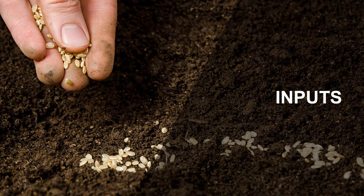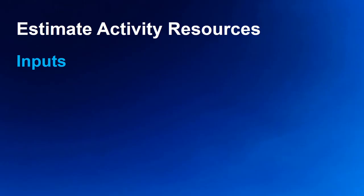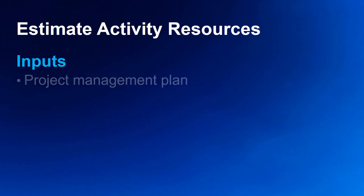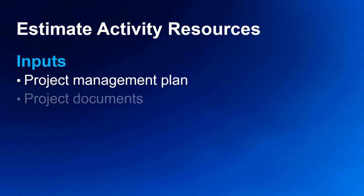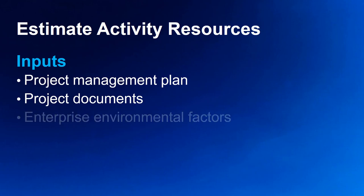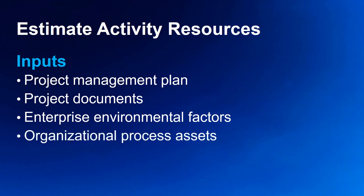Let's start with the inputs to the Estimate Activity Resources process — we have four of them. Within the project management plan, you'll need the resource management plan as well as the schedule baseline. Enterprise environmental factors such as resource availability, location, and skill can all influence resource selection. Organizational process assets can also influence or impact resource use — most common examples are policies or procedures that address staffing, the rental or purchase of materials, equipment, and supplies.